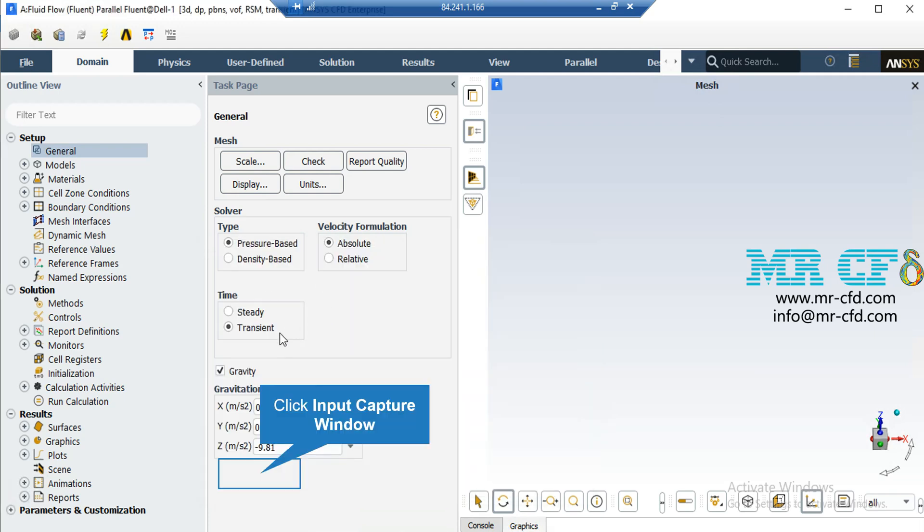Now, there are several assumptions taken into account for this project. The first one is that the type of our solver is selected to be pressure based. As for the velocity formulation, we have selected absolute formulation. And as for the time study, we have selected transient time study since we are dealing with a time progressing phenomenon. Also, we have included the gravity and the value of gravity is defined to be equal to minus 9.81 in z direction.